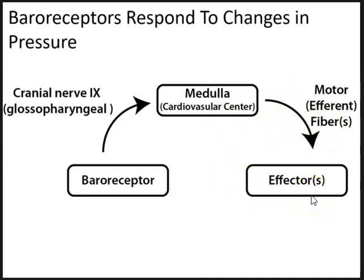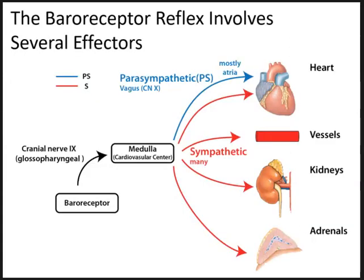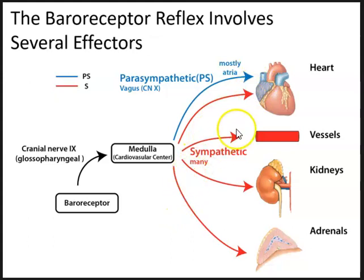The processing center then sends its own signal down the motor efferent fibers to the effectors — basically anything that could change blood pressure. The cardiovascular center in the medulla will increase parasympathetic activity and decrease sympathetic activity to slow down the heart and dilate the arterioles. Efferents such as cranial nerve 10, the vagus nerve, go to the atria and the sinoatrial node. Sympathetic motor efferents go to the heart, vessels, kidneys, and adrenal glands. The vessels are under sympathetic control only.